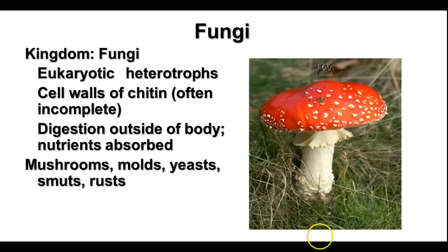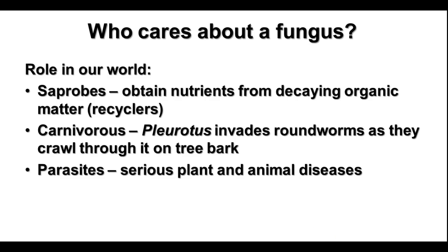Fungi include things like mushrooms, molds, yeasts, smuts, and rusts. Why do we need to care about fungi? Saprobes or saprophytes are things that obtain nutrients from decaying organic material, which is really important because we need decay to recycle the nutrients locked up in organisms so they can be used over and over again. Some fungi are actually carnivorous — there's one called Pleurotus that invades roundworms. Other fungi are parasites and can cause serious plant and animal diseases.